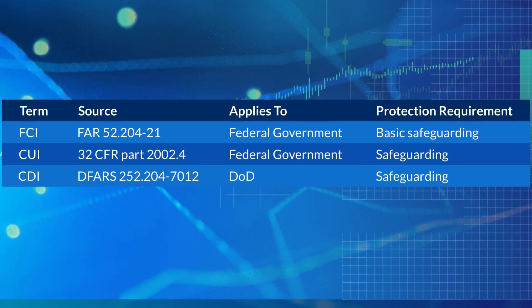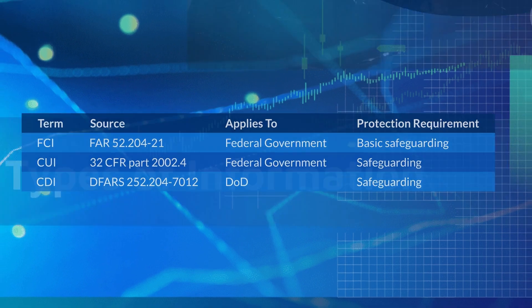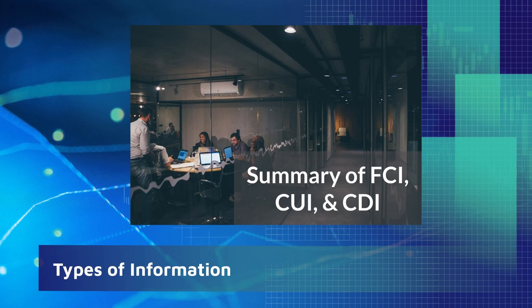In summary: FCI is defined in FAR 52.204-21 — it applies to federal contracts and requires basic safeguarding. CUI is defined in 32 CFR Part 2002.4 — it applies to federal contracts and requires safeguarding. CDI is defined in DFARS 252.204-7012 — it applies to DOD contracts and requires safeguarding. That's all folks, see you in the next one.